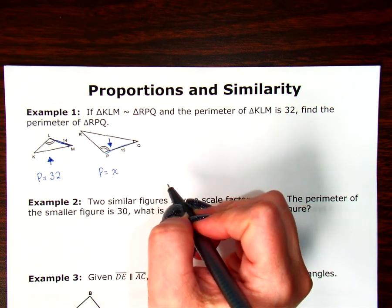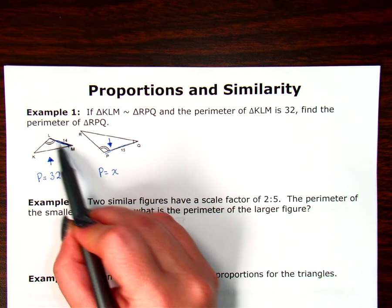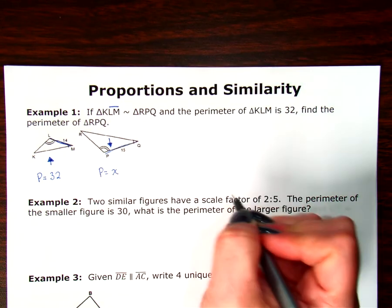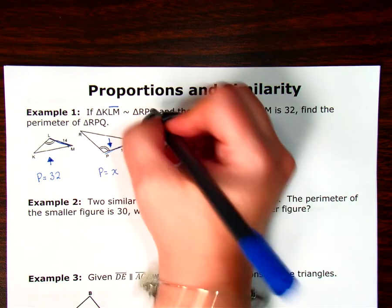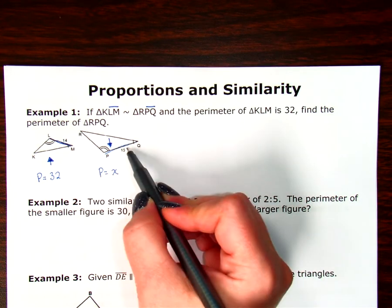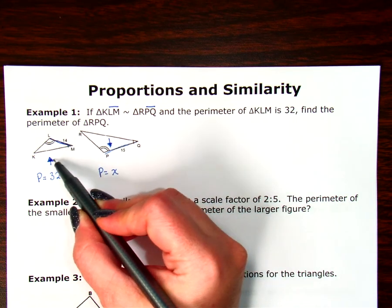So I want to make sure that those are corresponding sides. I'm going to use my similarity statement and look at where L and M are. LM are my second two letters in my triangle name. And then PQ are also my second two letters in my triangle name. So these are corresponding pieces.